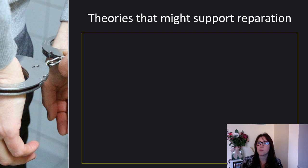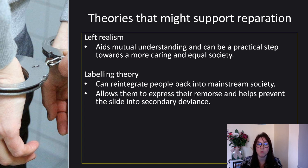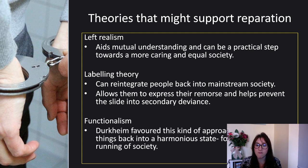Theories that might support reparation: left realism — it aids mutual understanding and can be a practical step towards a more caring and equal society. Labelling theory — it can reintegrate people back into mainstream society rather than just labelling them as criminal, allowing them to express their remorse and helping prevent the slide into secondary deviance and full label status. Functionalism — Durkheim favoured this kind of approach to put things back into a harmonious state for the smooth running of society.